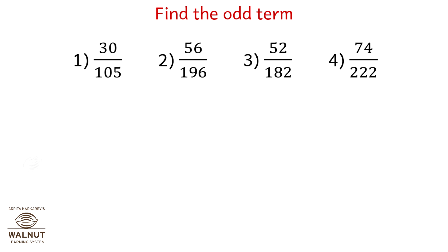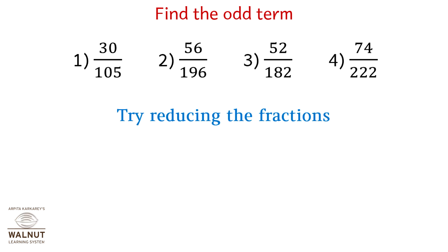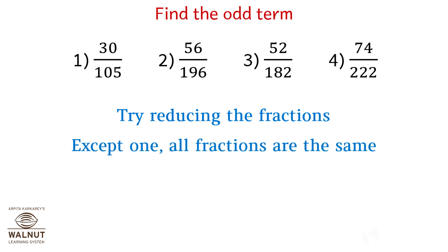Find the odd term again. Try reducing the fractions. Except one, all fractions are the same. Which one isn't? It's 74 upon 222 — option 4.